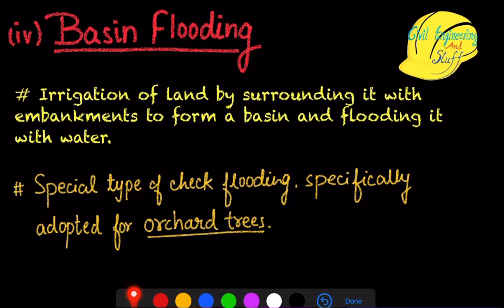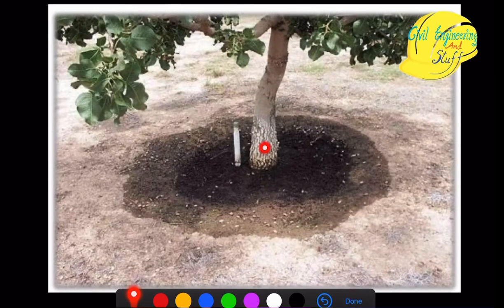The next method is basin flooding, which is a special type of check flooding used especially in areas where conservation of water is important and we want to minimize losses. Here we create a small embankment around each crop and water is applied specifically to that section. This technique is very popular for irrigating orchard trees. Instead of flooding the whole land, we create an embankment and provide water to that specific section only, conserving a good quantity of water.